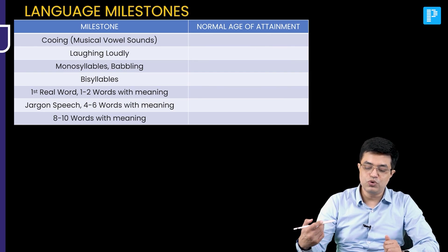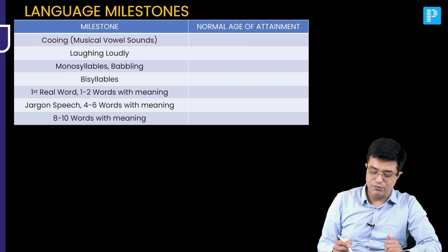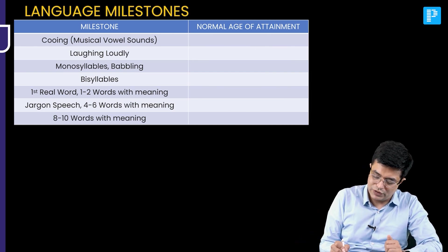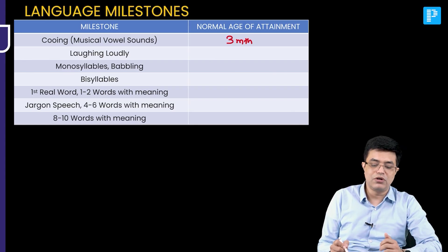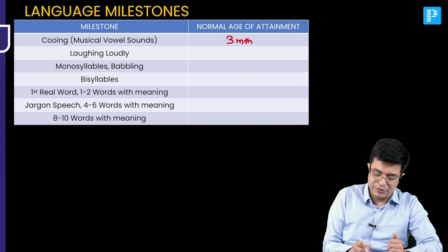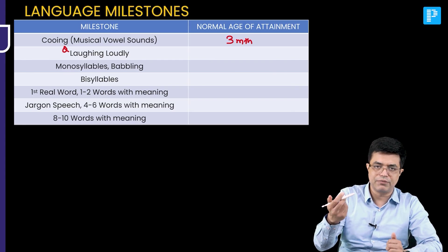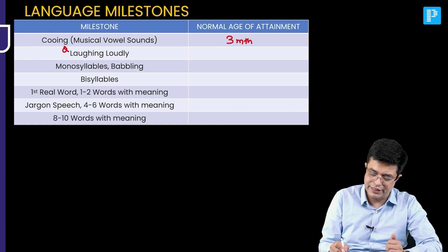First of all, cooing or musical vowel sounds produced by the child — the child is able to do that starting from 3 months of age. Laughing out loudly, which is part of a previous year question case scenario, comes at 4 months of age.